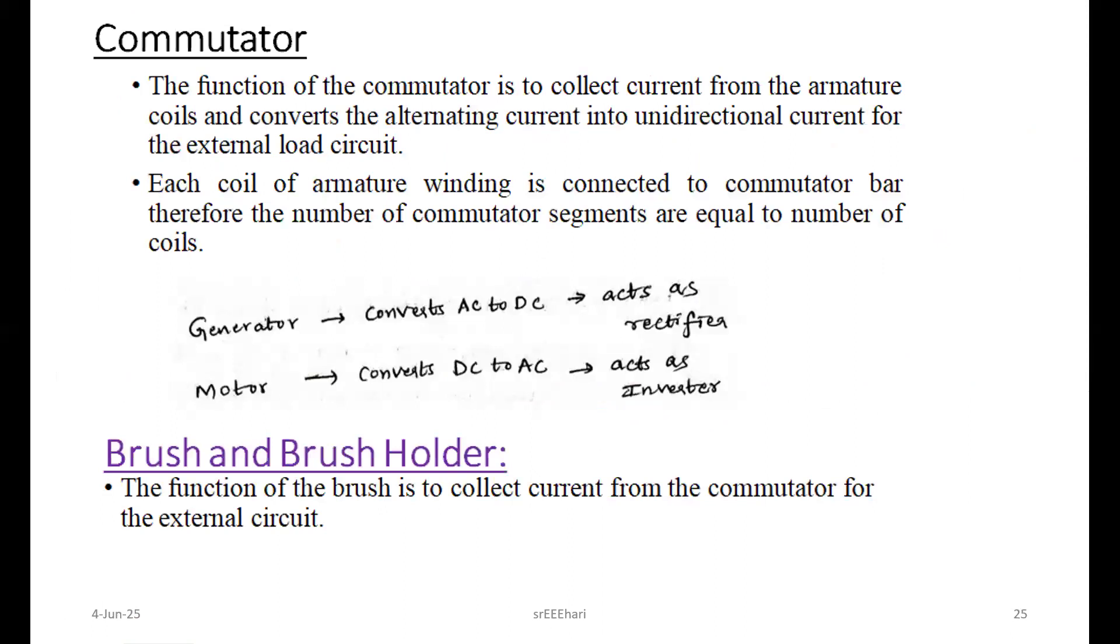Commutator converts AC to DC or DC to AC. Brushes are made up of carbon material. In order to transfer that electrical energy output, we may use these brushes, two brushes.